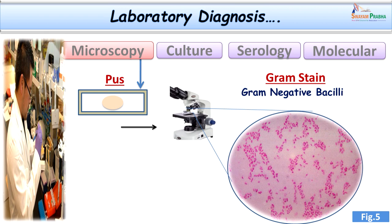The pus was smeared onto a grease-free slide and stained by Gram stain. As we can see, there were Gram negative, short, and delicate pleomorphic bacilli. We could see some slightly longer forms and some short coccobacillary forms. This was the finding of Gram stain from the pus.